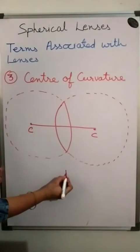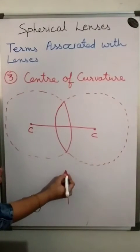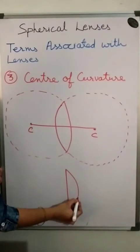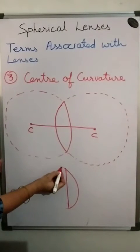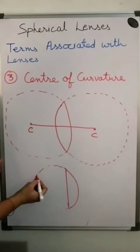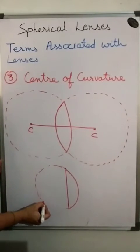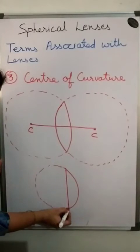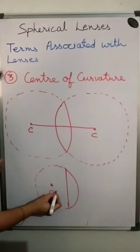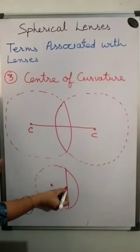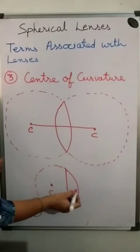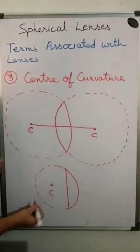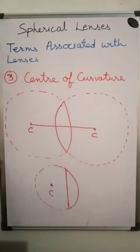For example, for a plano-convex lens, I complete the circle on the convex side — that gives the center of curvature. The center of curvature of the plane surface is assumed to be at infinity.